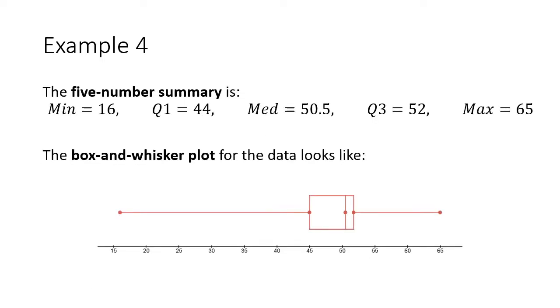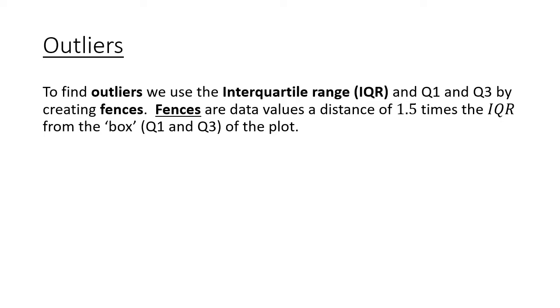To summarize my five-number summary, my minimum value was 16. I found Q1 was 44. My median was 50.5. Q3 was 52. And my maximum value was 65. I drew my box and whisker plot here. I made a dot at each of those values. I need to make sure I include my scale. It doesn't count unless you include that scale. You need that scale at the bottom. Hopefully you can see that the minimum value, there's a dot at 16, and 44, 50.5, 52, and 65. We make a box from Q1 to Q3.